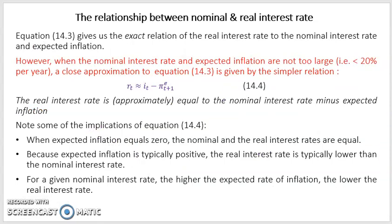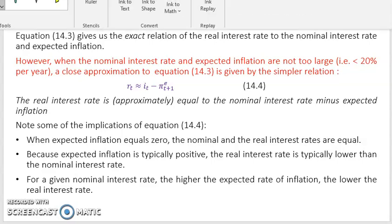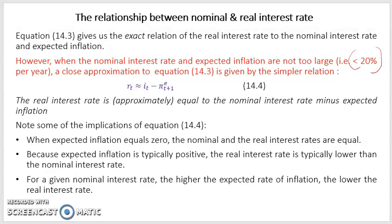While equation 14.3 gives the exact relation, when the nominal interest rate and expected inflation are not too large — say less than 20% — a close approximation is given by equation 14.4, which says the real interest rate is approximately equal to the nominal interest rate minus expected inflation. So the real interest rate is the nominal interest rate adjusted for inflation.